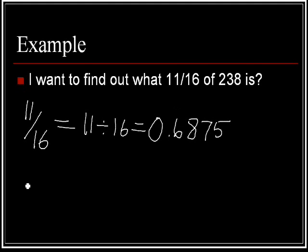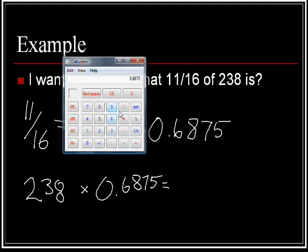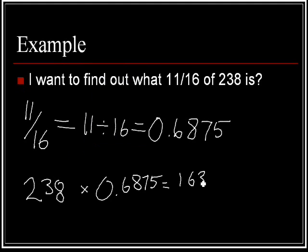I'm going to have 238 times zero point six eight seven five. And again, I'm going to go to my calculator times 238 equals 163.625. We're going to cover some more stuff about this later on, but this is just a quick example. So again, the steps. We take my fraction. We divide. It produces a decimal. And in this case, we're going to take our number. We're going to multiply it by the decimal. And that's going to give us our final amount.